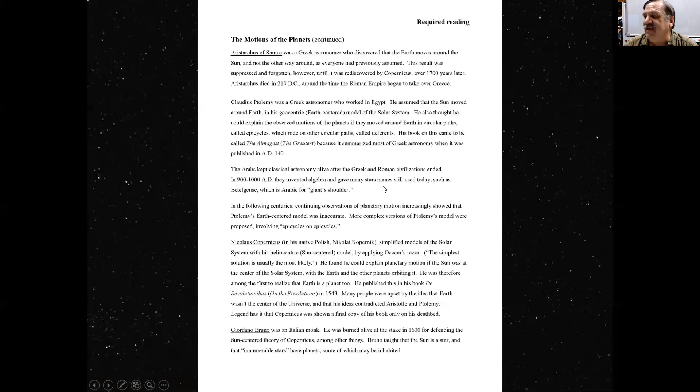The Arabs also invented algebra. And the Arabs gave many stars names. Just about all stars bright enough so that you could see with your alien eye in the sky, the Arabs gave names to, which are still used today. For example, Betelgeuse, which is Arabic for the giant's shoulder. They kept Ptolemy's book from wearing out. They kept copying it. So the Almagest is Arabic for the greatest.